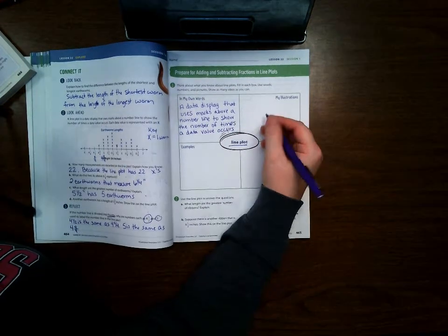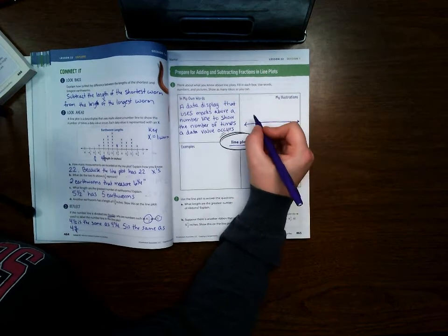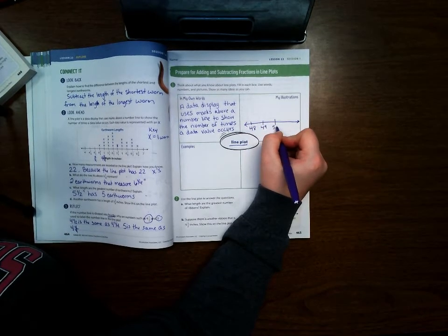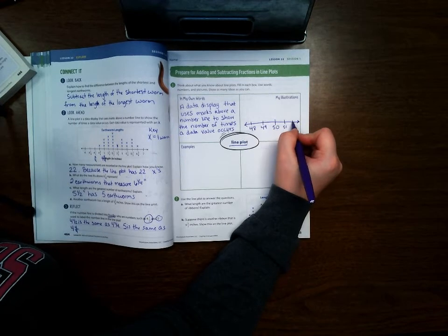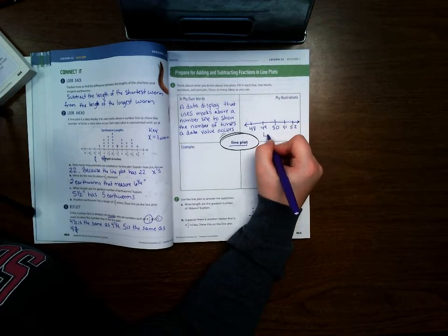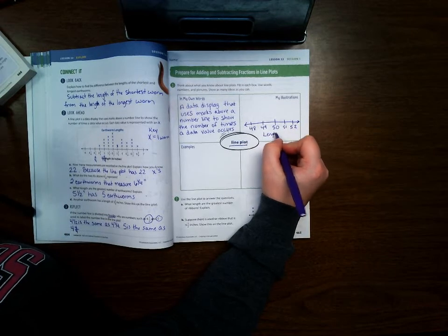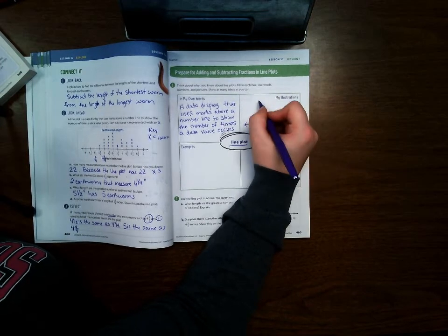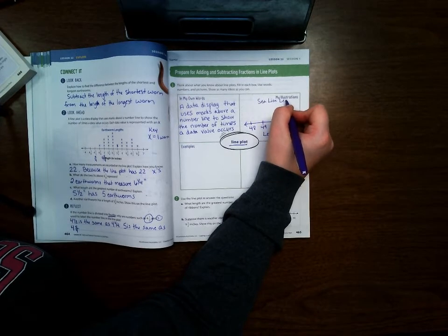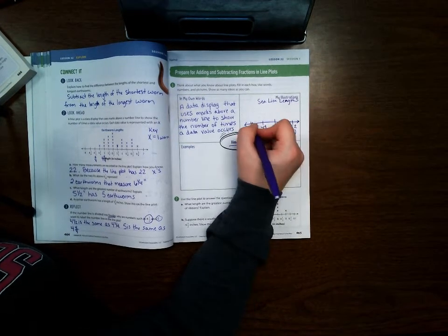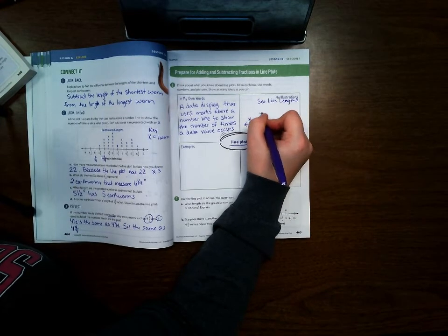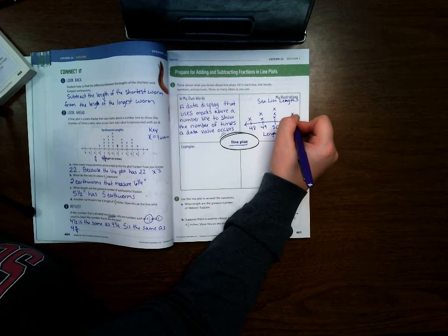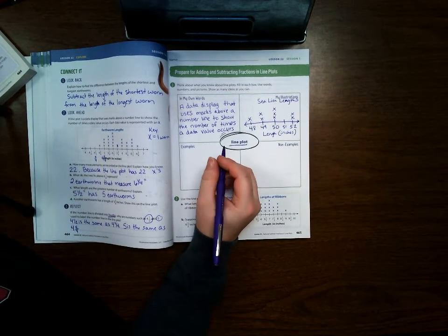So if we were to draw a picture of it, we could have something like this. And you can start this at whatever number you need to. So 48, 49, 50, 51, 52. We're going to call this the length in inches. These are going to be sea lions. Sea lion lengths.